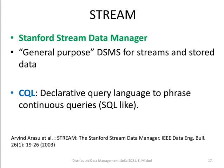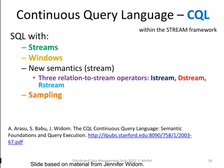STREAM, the so-called Stanford Stream Data Manager, was proposed by authors from Stanford in 2003 and is aiming at being a general-purpose data stream management system for streams, but also for stored data. The authors proposed CQL, a query language that allows us to incorporate statements on sliding windows. Basically, you can imagine CQL as being SQL, plus streams, plus windows, and some new semantics.